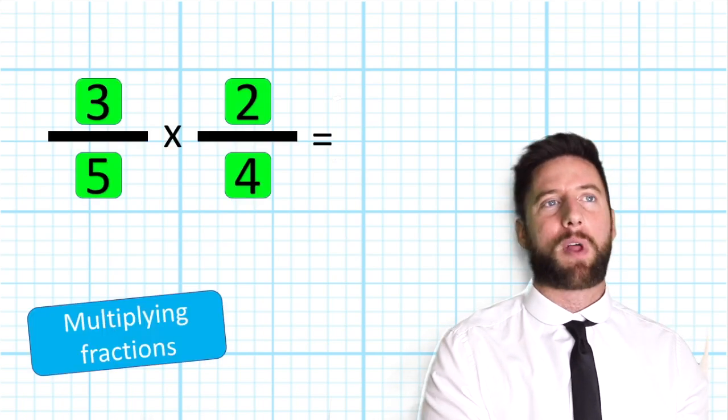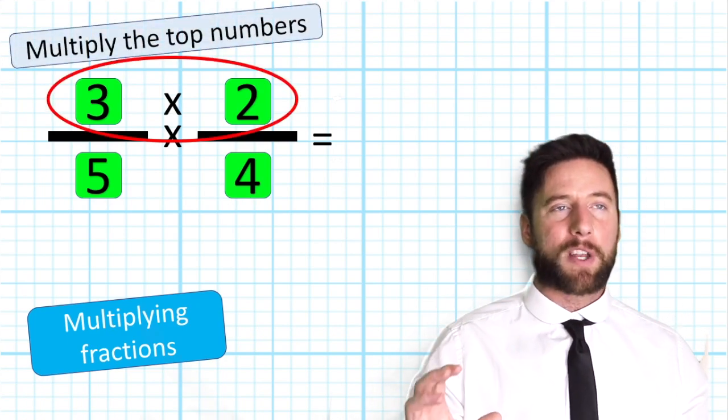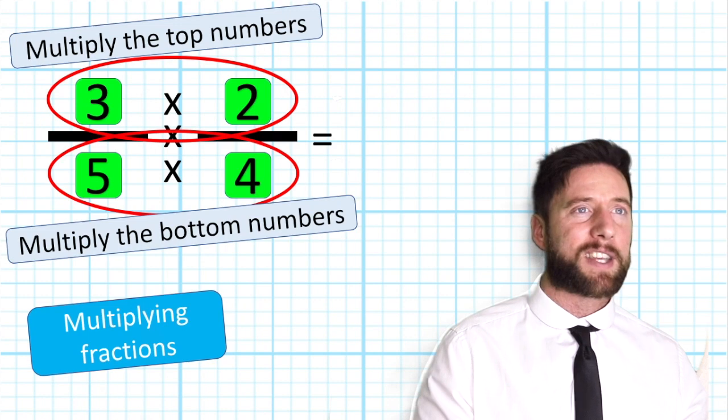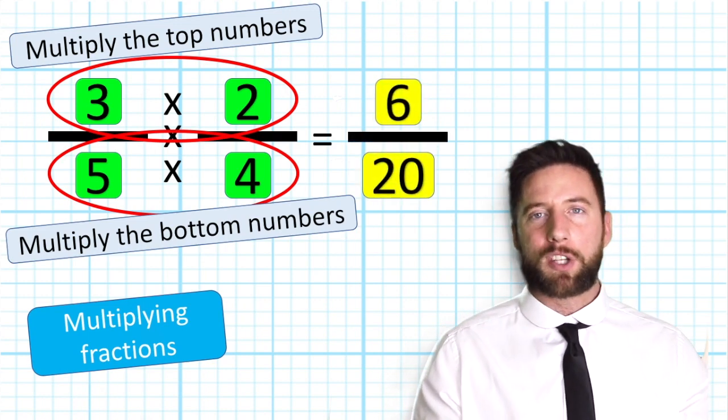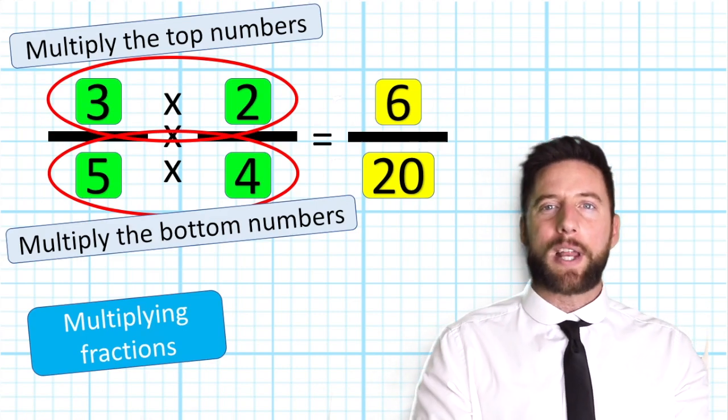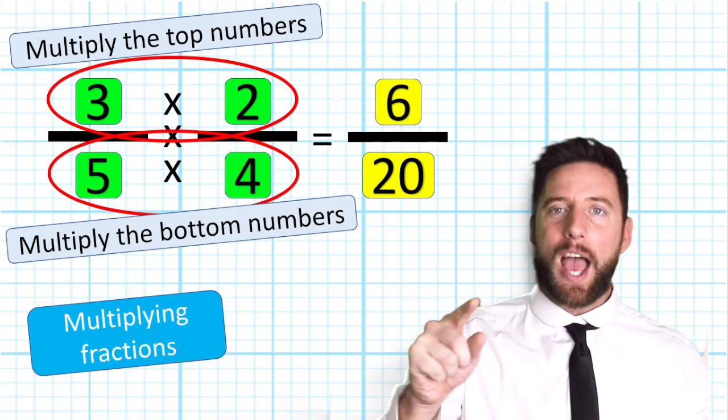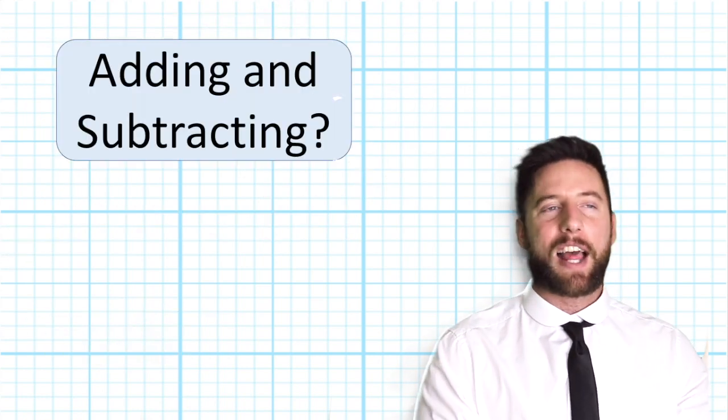So if you have looked at multiplying fractions, you will know that it's very simple. All we do is we multiply the top numbers and we multiply the bottom numbers. So if we have 3/5 multiplied by 2/4, then all we need to do is multiply the top numbers, 3 times 2 is 6. Bottom numbers, 5 times 4 is 20, giving our total of 6/20. But can we use that same trick for adding and subtracting fractions? Let's have a look.